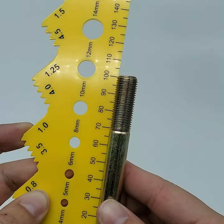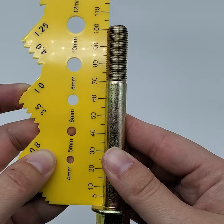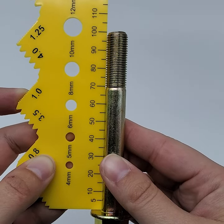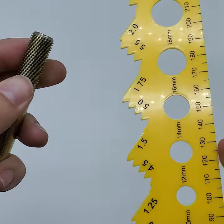Next we're going to measure the length. You measure the length of a bolt from underneath the head to the end, so this bolt is 100 millimeters long.